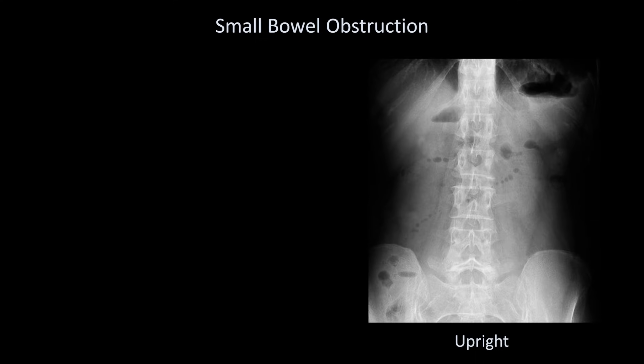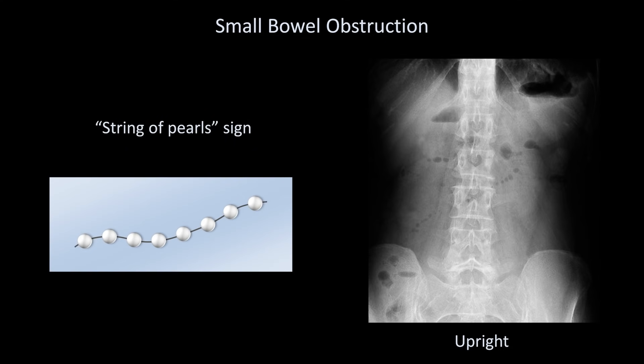This other upright film may not be as immediately obvious an example of an SBO, but it is a good example of the string of pearls sign, in which a chain of small air bubbles are caught between mucosal folds within an otherwise fluid-filled bowel loop. Each one looks round instead of having miniature versions of classic air-fluid levels due to the effect of water's surface tension at that smaller scale.